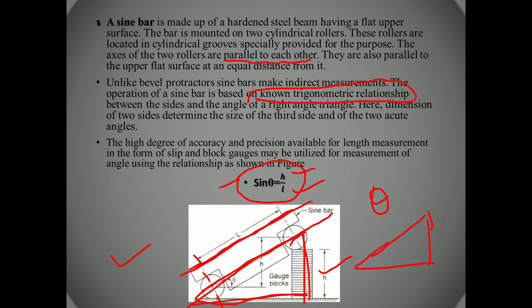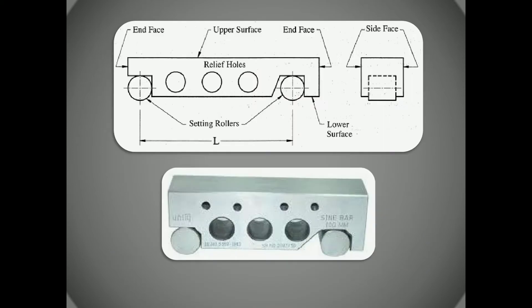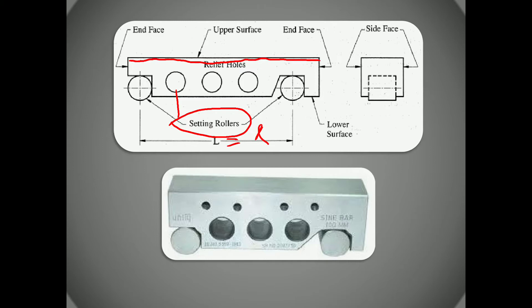Here are the constructional details of the sine bar. Relief holes are provided to handle the bar and also during the manufacturing hardening process so that thermal stresses are not induced in the surface. The bar has an end face, an upper face which is a highly finished surface, left and side faces, and setting rollers. The length between the two rollers is denoted as small l or capital L, and this is the lower surface.